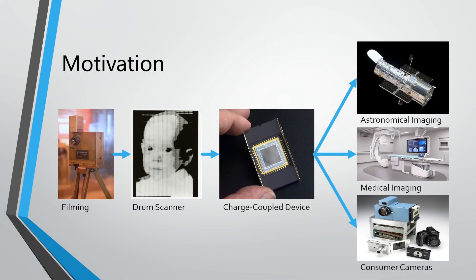So what did people used to record images? In the old time, people hired painters to draw on canvas. And then we have films, but it's still expensive for normal users. A drum scanner was designed to scan objects and convert them into electrical signals. After that, CCD was invented and it was used to take images and store them in electrical memory.